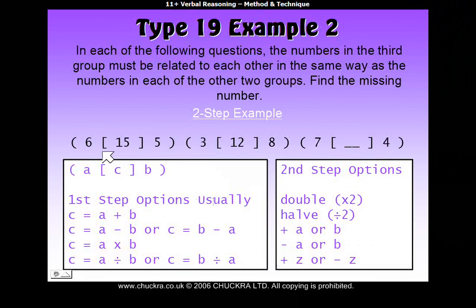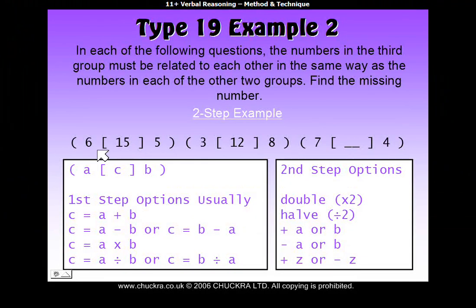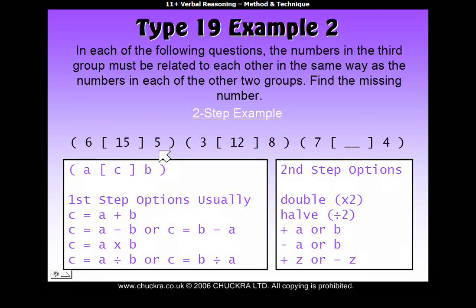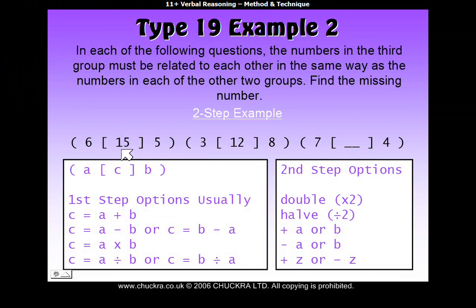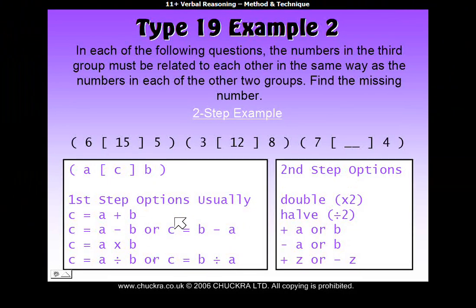So let's look at this particular example. We need to find a way of getting 15 from the outside numbers. If we add A and B, 6 plus 5 is 11, which doesn't equal 15. To get to 15, we'd have to add 4 on top of that. So maybe the rule is A plus B, and then the second step is to add 4. Let's try that on the second group.